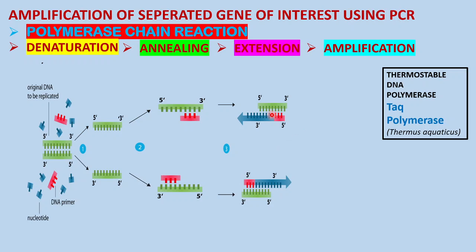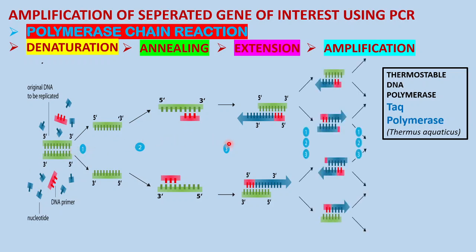In amplification, the two daughter strands obtained are again made to pass through denaturation, annealing, and extension. Each cycle doubles the number of copies: from 1 you get 2, from 2 you get 4, from 4 you get 8, and so on — this is a geometric progression. After 30 such cycles, you get approximately 1 billion copies of the original DNA fragment, which can be preserved for future use.